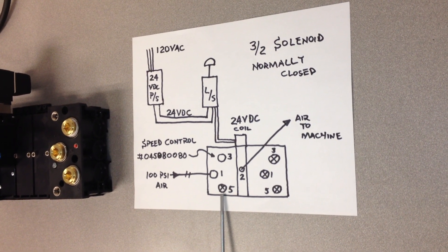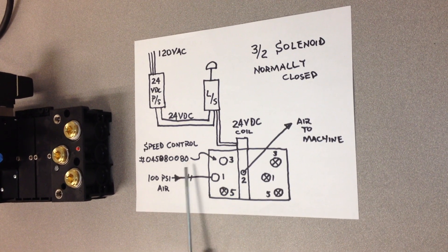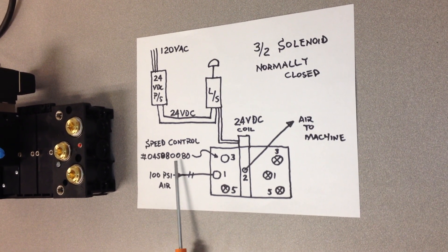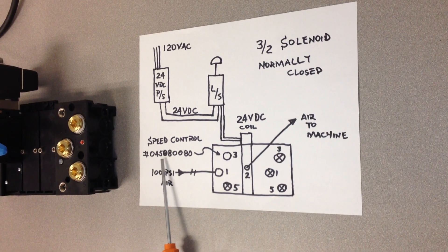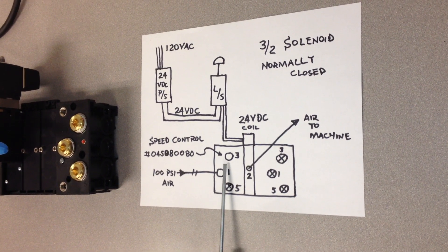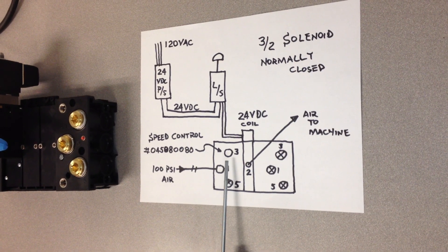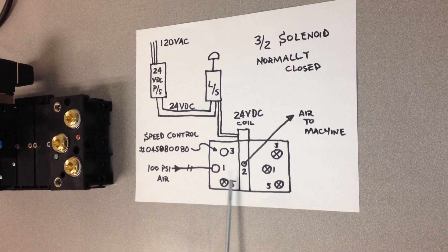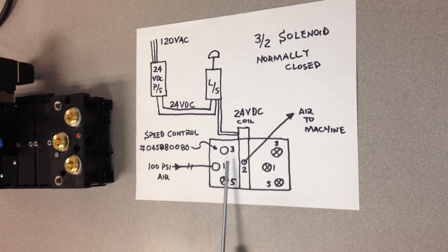Port five is plugged. And in port three, we have something called a speed control, and this comes from applied fluid power. And the part number is 045-08-0080. The reason for having a speed control is we have to have a differential pressure of 27 psi across the solenoid for things to work properly. So that may or may not be required in your application.